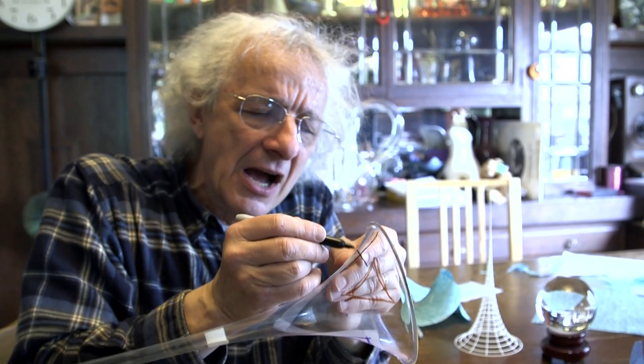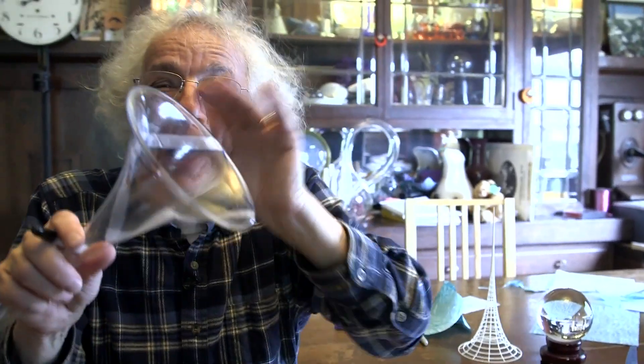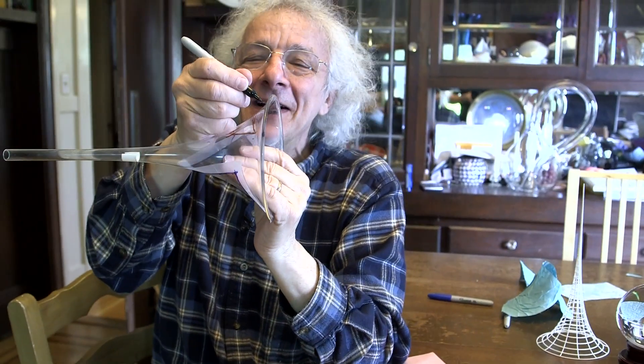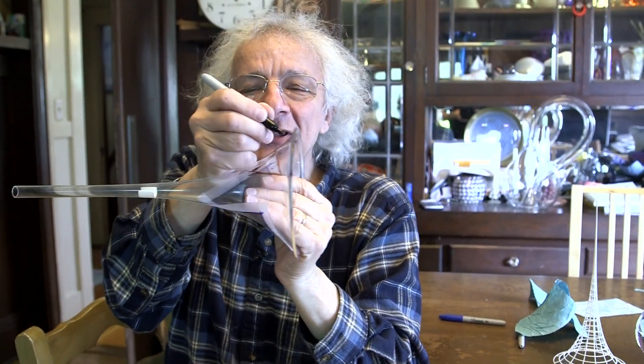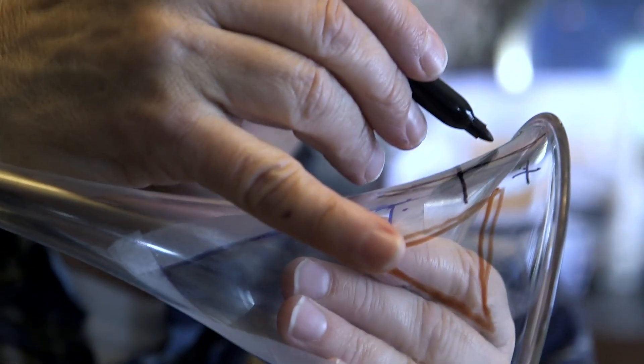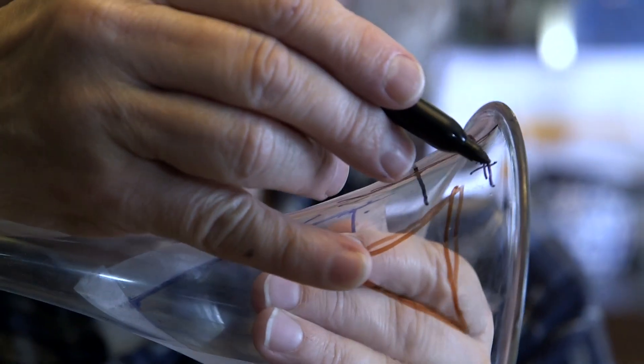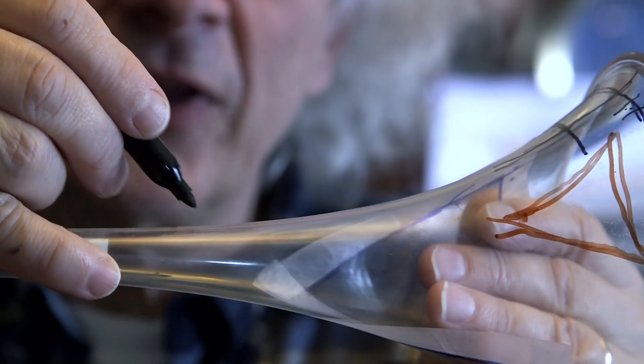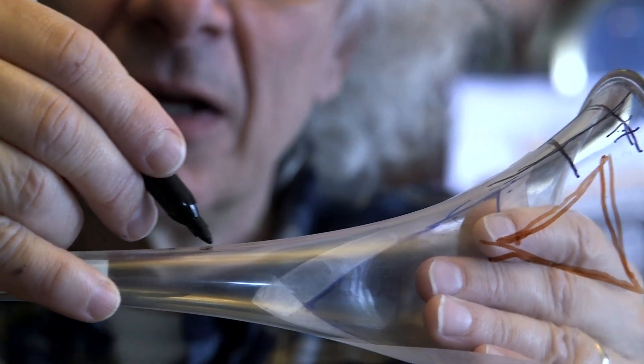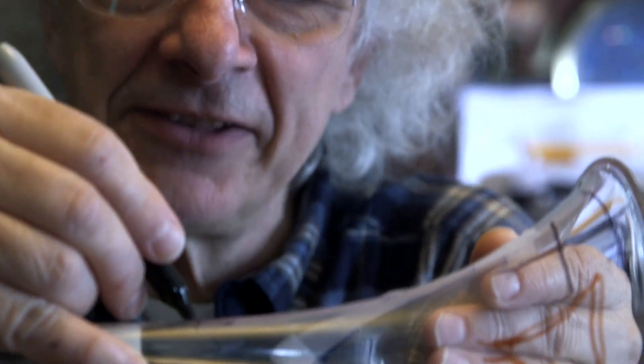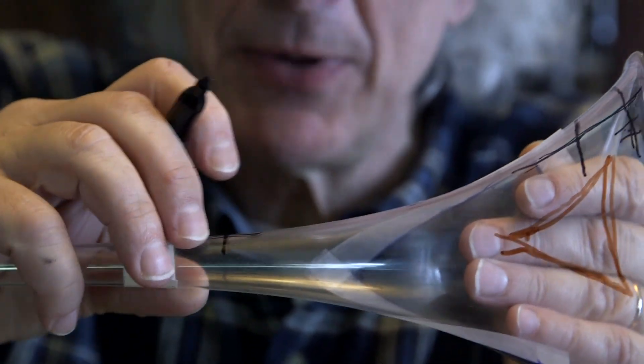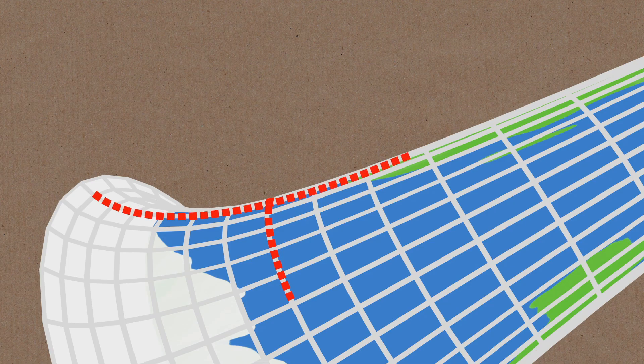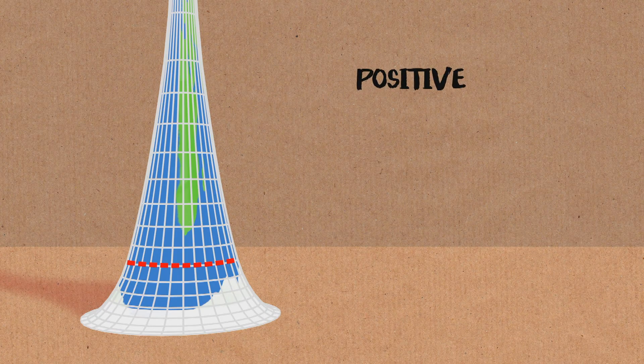Turns out that a pseudo-sphere has everywhere constant negative curvature. That means that if I multiply to get the Gaussian curvature here, where the positive going here is not very big, but the negative going is huge. And over here, the negative going curvature is kind of small, but the positive curvature along here is quite big. A pseudo-sphere everywhere has constant negative curvature.